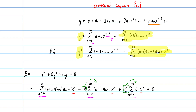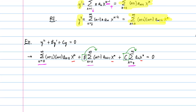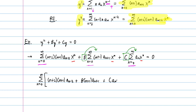We can write this entire equation as a single summation: the sum from 0 to infinity of [(n+2)(n+1)·a sub n+2 plus b·(n+1)·a sub n+1 plus c·a sub n] times xⁿ, and this whole thing must equal 0.